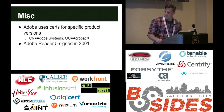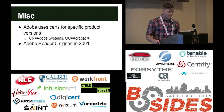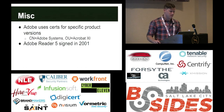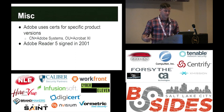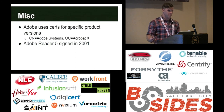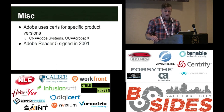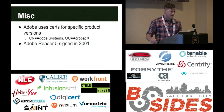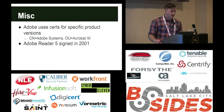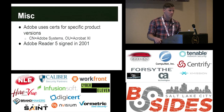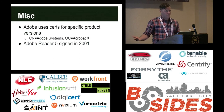Some miscellaneous information: Adobe signs their products with a different certificate per product and per version. For example, Adobe Reader version 11 is signed with a certificate specific to Adobe Reader version 11, different from the one used for version 10, and different products get different certificates. That's kind of rare—most companies just use the same certificate for all their products. Adobe Reader version 5 was first signed back in 2001, just to give a sense of how long files have been signed.